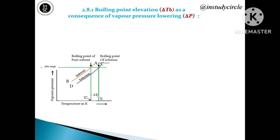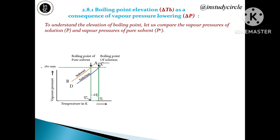Boiling point elevation (delta Tb) is a consequence of vapor pressure lowering (delta P). When a non-volatile solute is added to a pure solvent, less surface area is available for the solvent molecules to evaporate, so fewer vapors are produced. As a result, the vapor pressure of the solution is lower than that of the pure solvent, and since vapor pressure is lowered, the boiling point obviously increases.